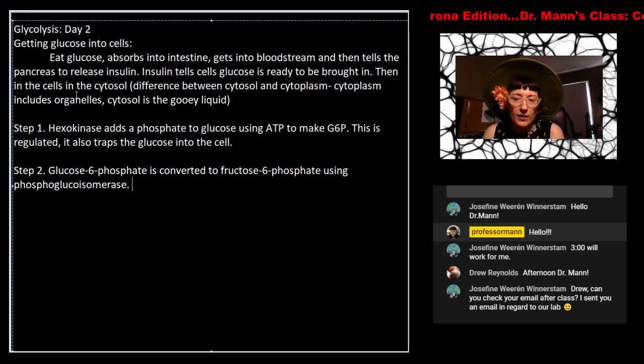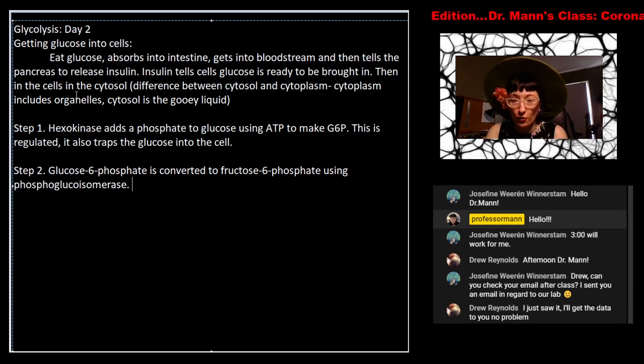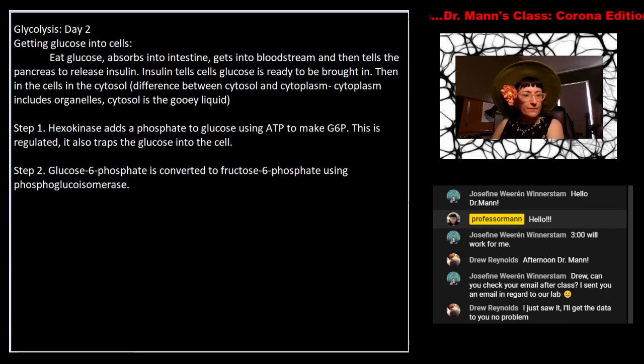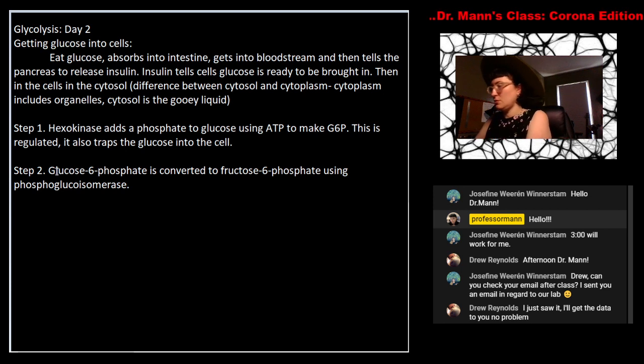So glucose 6-phosphate is converted to fructose 6-phosphate. The enzyme that does this is called phosphoglucoisomerase. You'll see over and over again that we have different kind of classes of enzymes. So kinases are a class of enzymes that add phosphate using ATP. Isomerases are ones that do the same sort of chemistry over and over and over again. So I want to talk about the terminology here.